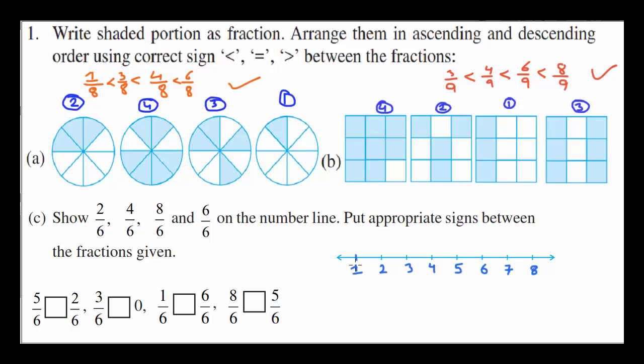Marking it 1, 2, 2, 8. So we have to write 2 over 6 based upon the things, 4 over 6 and 6 over 6, 8 over 6. You just have to represent these things.